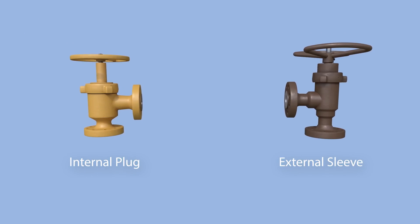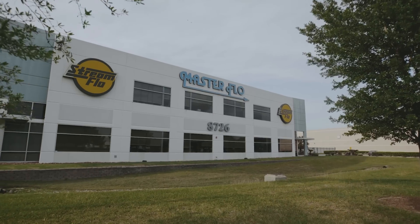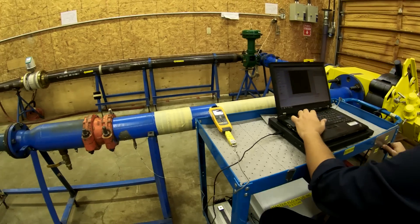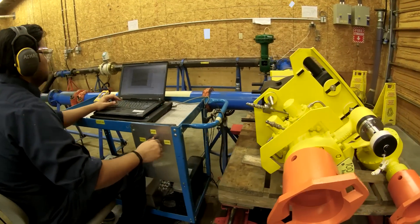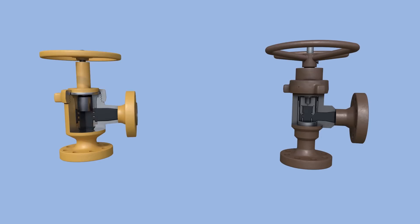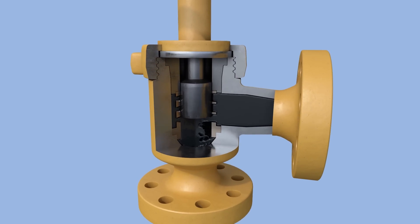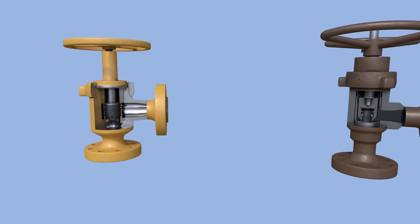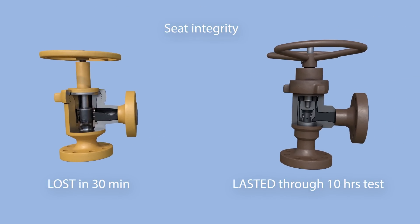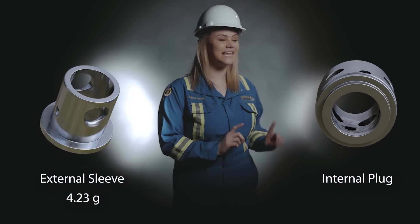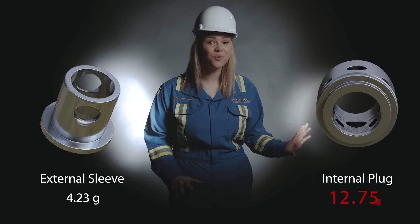MasterFlow tested the effects of erosion at their state-of-the-art testing facility by placing two valves in series, subjecting both to identical sand and flow rate conditions. As the fluid began to move towards the vena contracta — where the diameter of the stream is smallest — the fluid in the internal plug design accelerated in the cage port and directly impinged onto the exposed internal plug, resulting in extensive material loss. The seat integrity of the internal plug was lost within 30 minutes. The external sleeve's seat feature lasted throughout the 10-hour test, with material loss of only 4.23 grams. In stark contrast, the internal plug design lost an astounding 12.75 grams — more than three times the material.